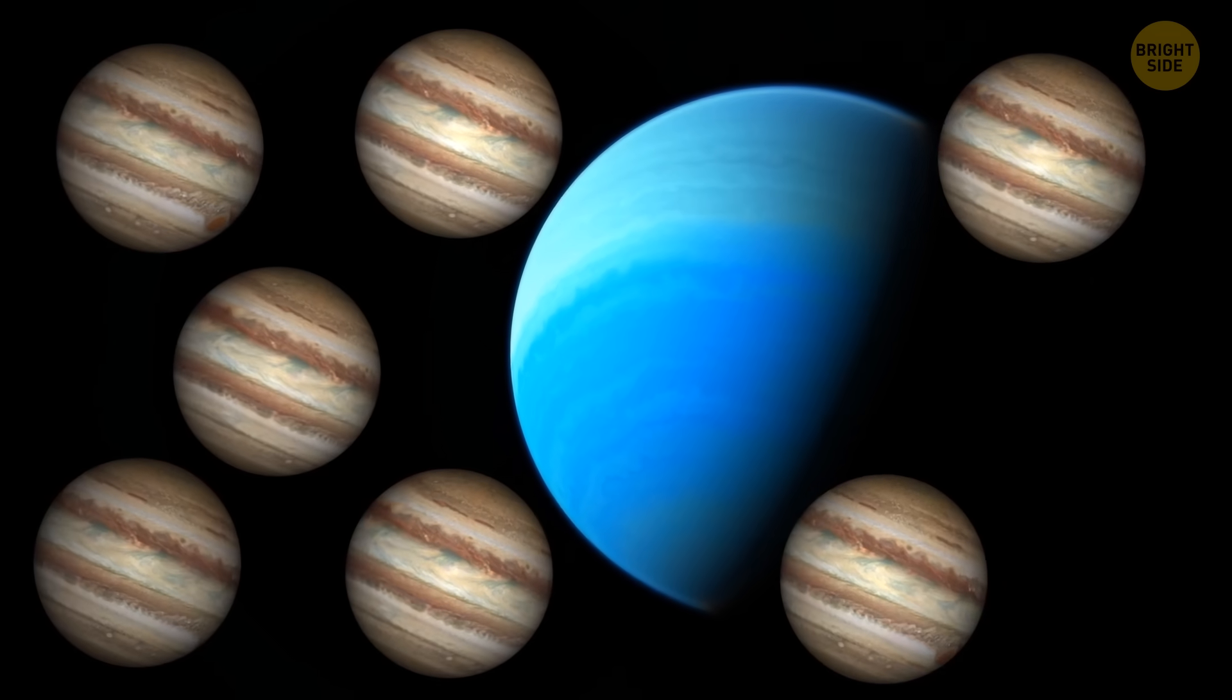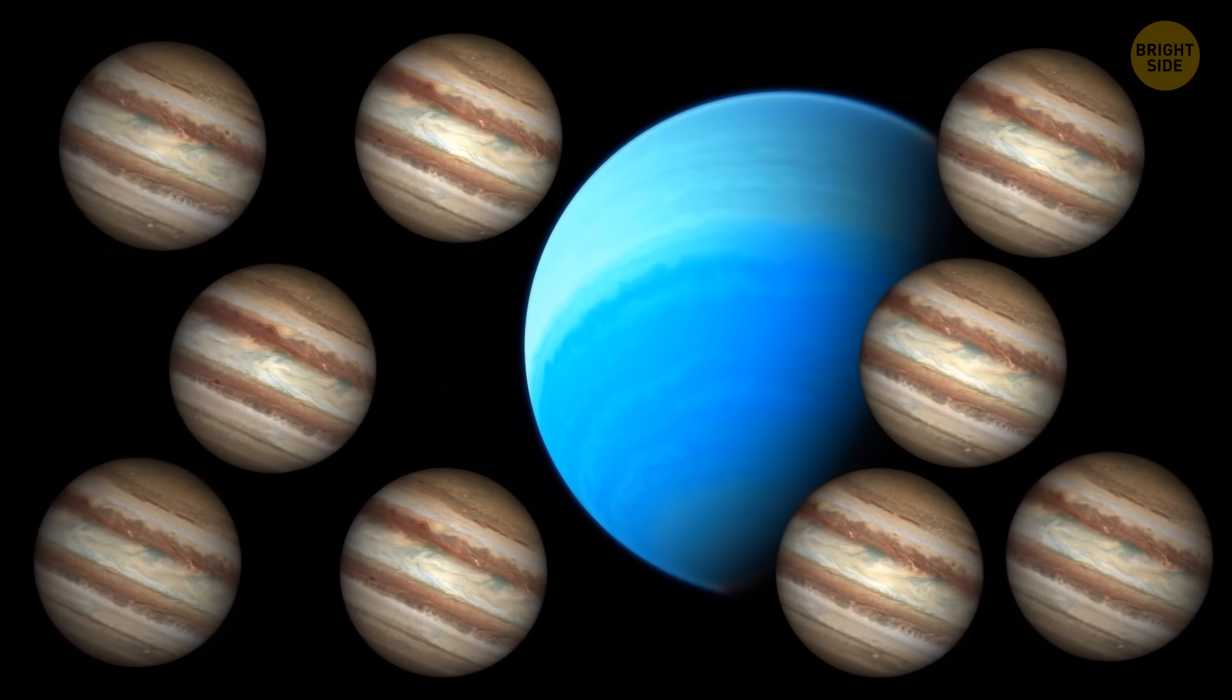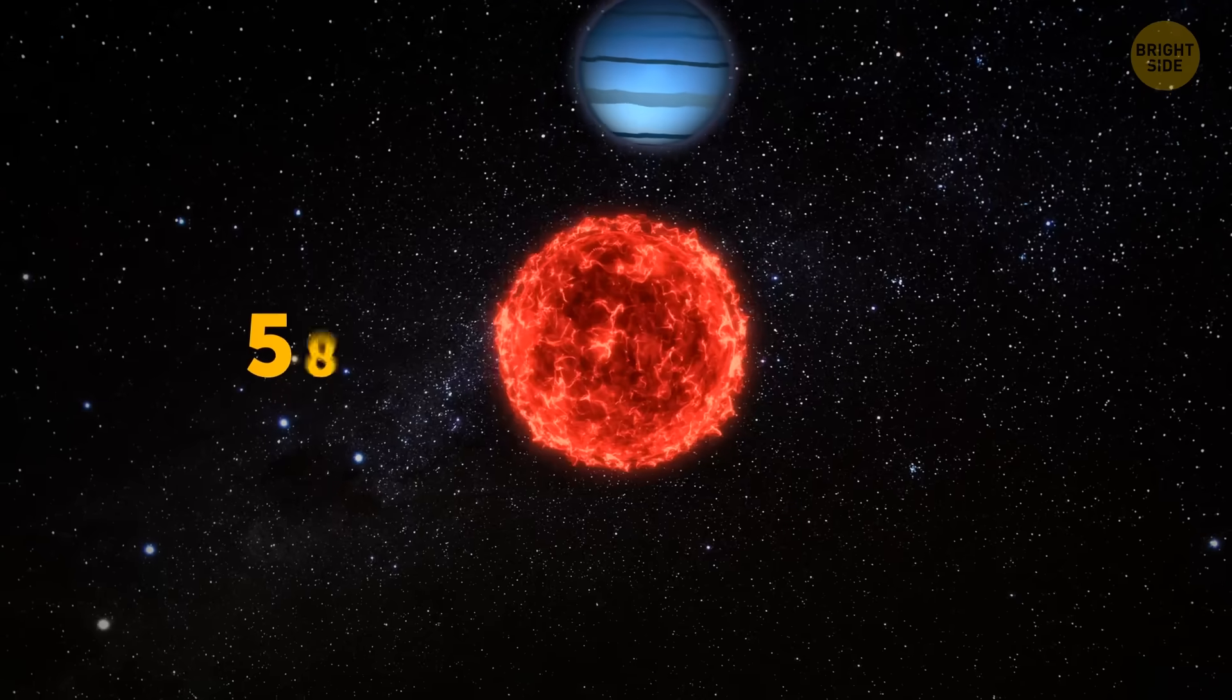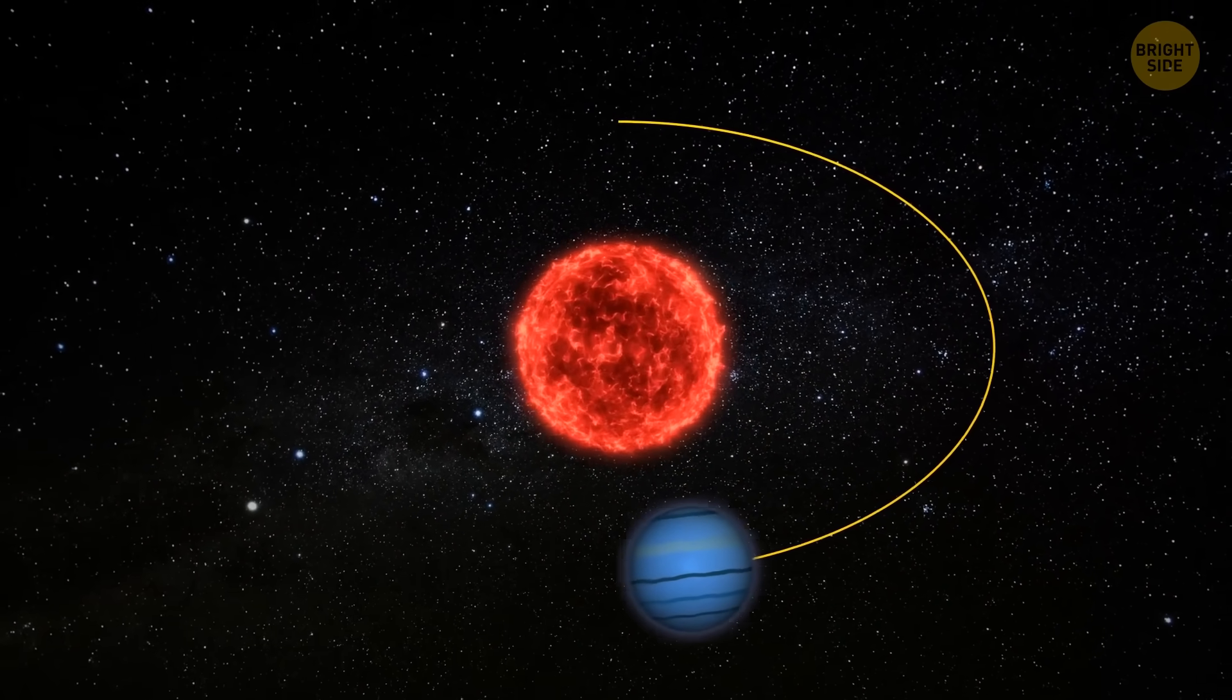But back to the newly discovered planet. It's a gas giant whose mass equals that of 9 Jupiters. Can you imagine this colossus? It takes the planet, named AB Aurigae B, almost 588 Earth years to complete just one journey around its parent star.